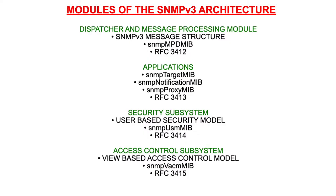The modules discussed on the previous slides are defined by the IETF in a number of RFCs. Note that there is not a single RFC that describes the complete SNMP architecture, since the design requirements said that different modules should move independently towards the status of full standard. The dispatcher and message processing module is standardized by RFC 3412, which describes the SNMP version 3 message structure and the message processing and dispatcher MIB, which contains some counters for processing errors. SNMP applications are standardized in RFC 3413, which also includes MIB modules describing, for example, how to deal with notifications.